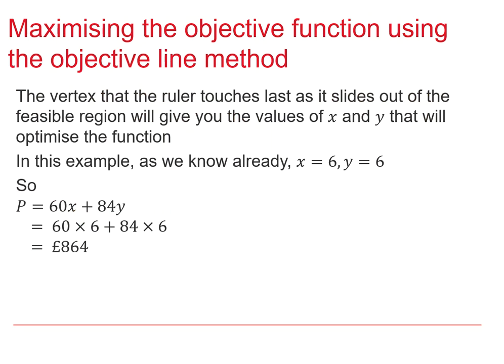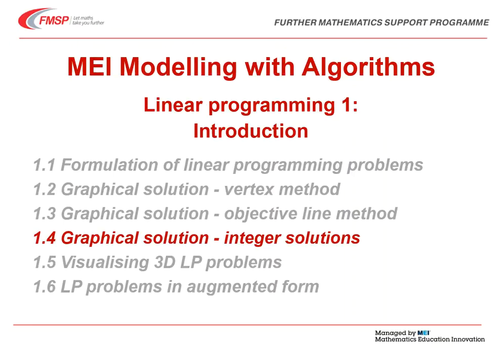So, as we found before, we've established that the place we want to be is 6, 6. And then the final thing to do is to put that into the objective function and work out the value. And of course, just as it was in the previous video, it's 864 pounds.